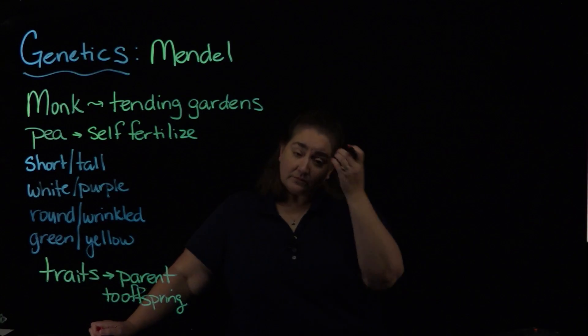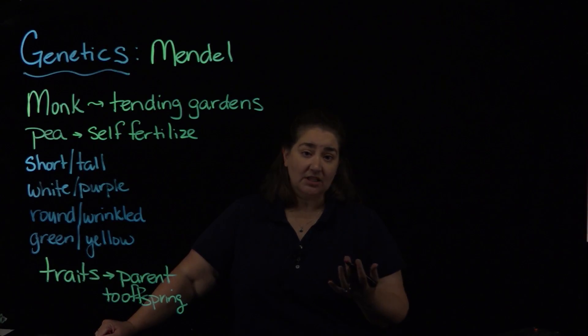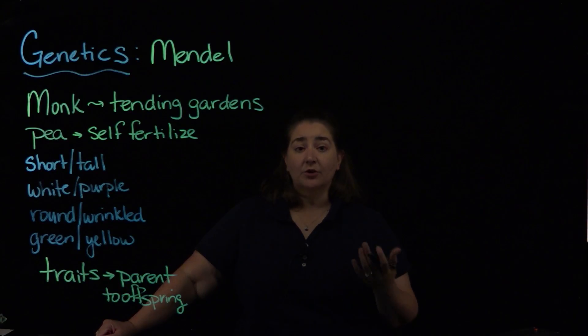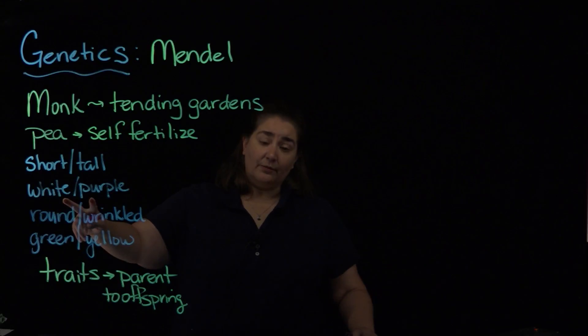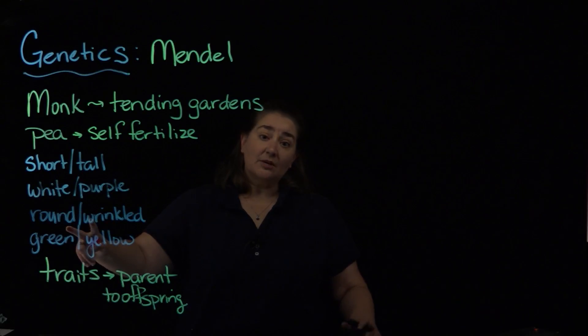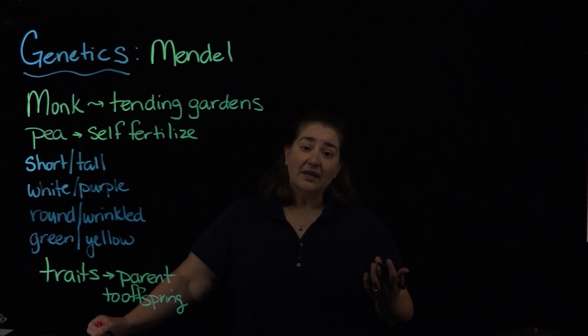And while Mendel didn't coin the term genes, that's essentially what he was looking for or looking at. He was looking at genes that controlled the color of the flower, height of the plant, shape of the pea, color of the pea.